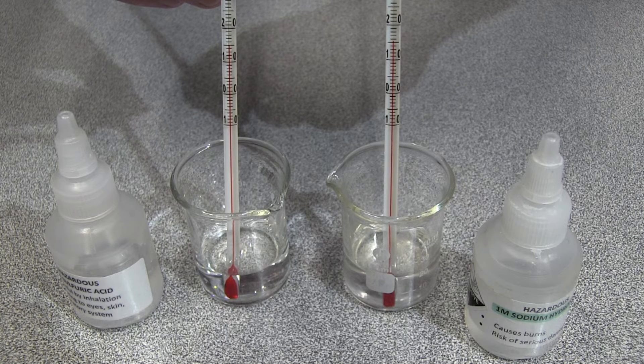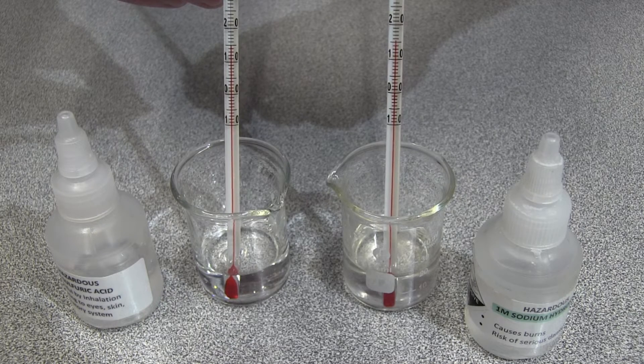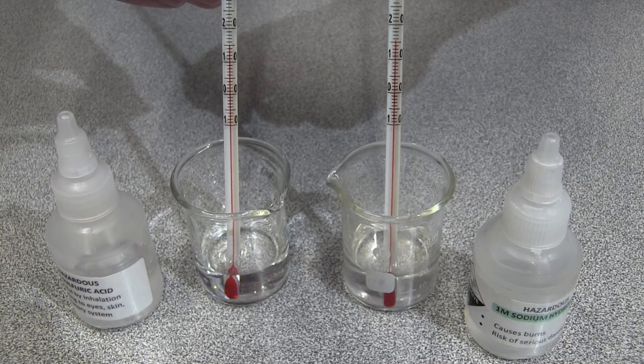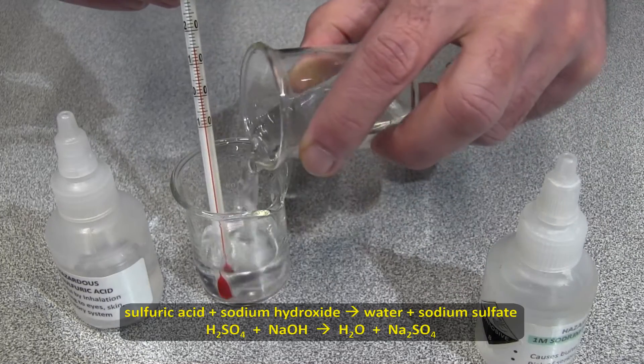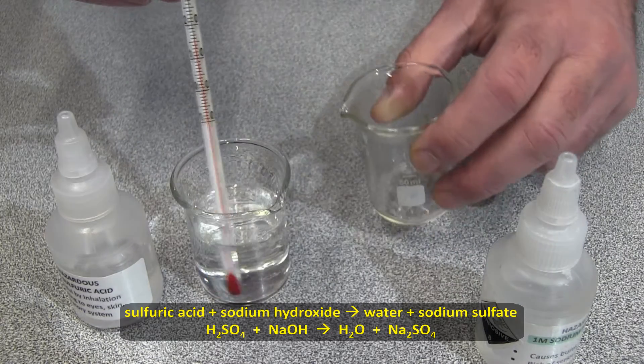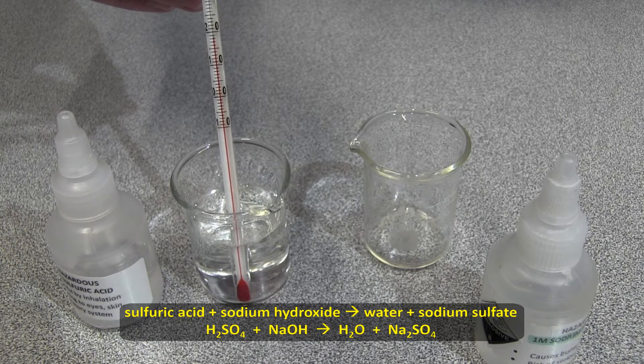Now, when a neutralization reaction occurs, it's not always obvious, but heat is always generated. The sulfuric acid and the sodium hydroxide here are both about 15 degrees Celsius, but when I mix them, a chemical reaction takes place which produces water and sodium sulfate. And the temperature quickly rises to about 20 degrees Celsius.